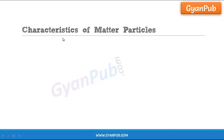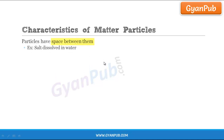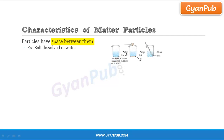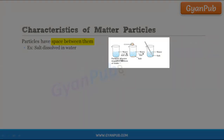We are going to discuss about the three main characteristics of particles of matter. The first main characteristic is that these particles have space between them. This can be explained by taking an example of salt dissolving in water. Let us take some water in a beaker up to a certain level, then dissolve salt in it. After dissolving, we observe that the water level is not changed before dissolving and also after dissolving.